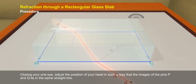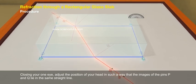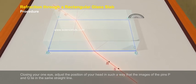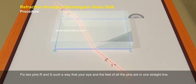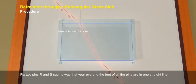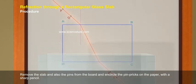Closing your one eye, adjust the position of your head in such a way that the images of the pins P and Q lie in the same straight line. Fix two pins R and S such that your eye and the feet of all the pins are in one straight line. Remove the slab and also the pins from the board and encircle the pinpricks on the paper with a sharp pencil.